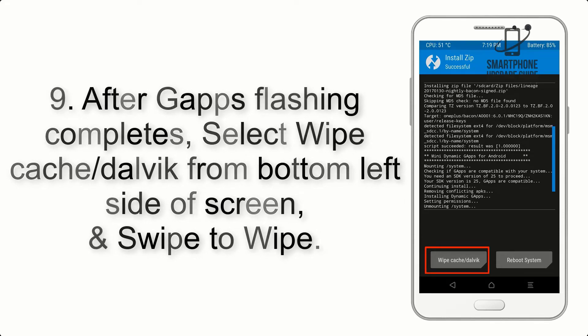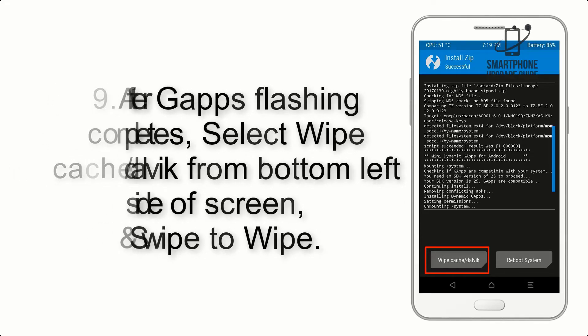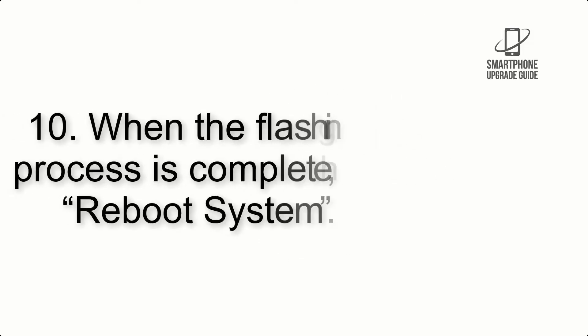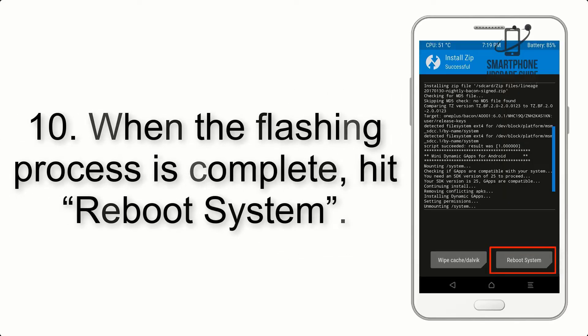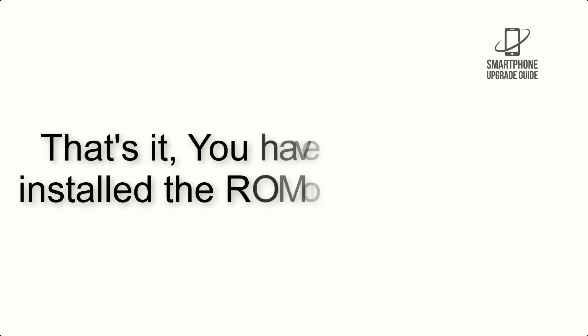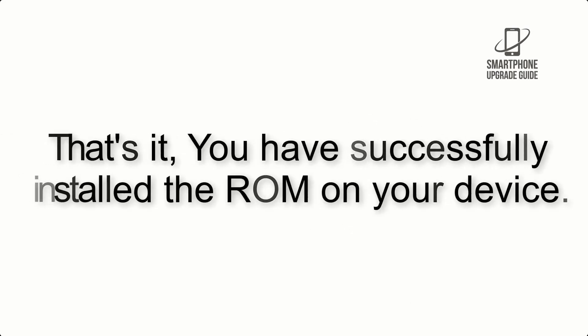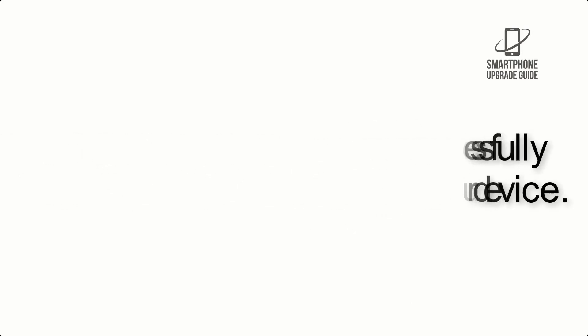Step 9: After GApps flashing completes, select Wipe Cache and Dalvik from the bottom left side of the screen and swipe to wipe. Step 10: When the flashing process is complete, hit Reboot System. That's it — you have successfully installed the ROM on your device.